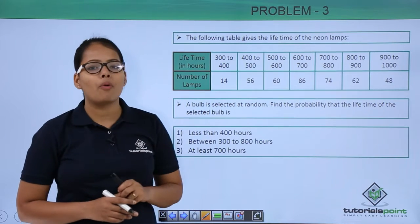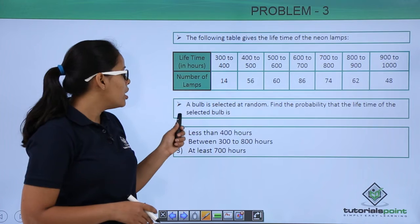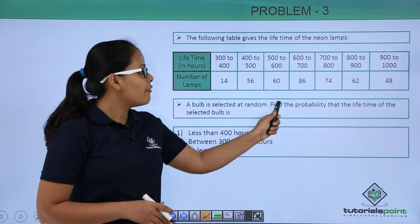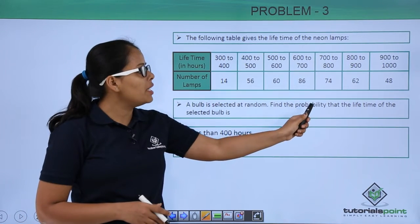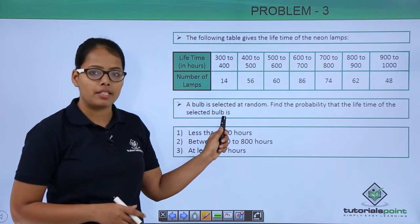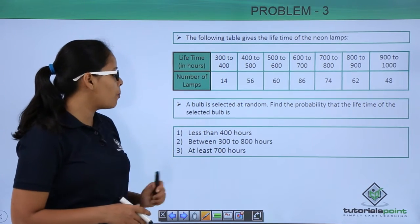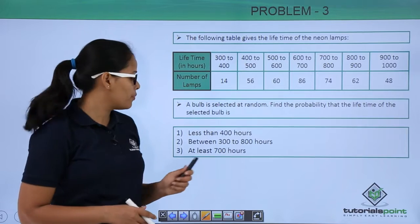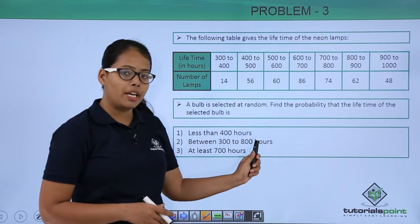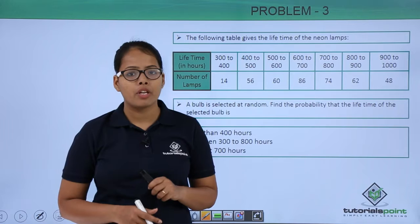Now from this given data, what do you need to find out? A bulb is selected at random. Find the probability that the lifetime of the selected bulb is: first, less than 400 hours; second, between 300 to 800 hours; and third, at least 700 hours.